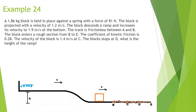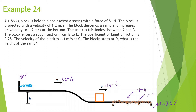A 1.86 kg block is held in place against the spring with a force of 18 N. The block is projected with a velocity of 1.2 m/s. The block descends a ramp and increases its velocity to 1.9 m/s. The track is frictionless along A to B. The block enters a rough section from B to E. The coefficient of kinetic friction is 0.28. The velocity of the block is 1.47 m/s at point C. The block stops at point D, velocity equals 0.